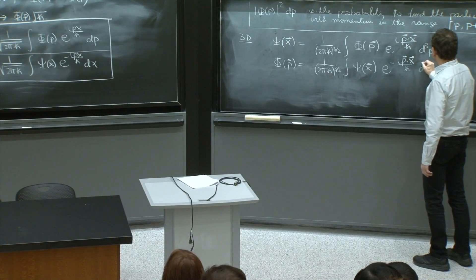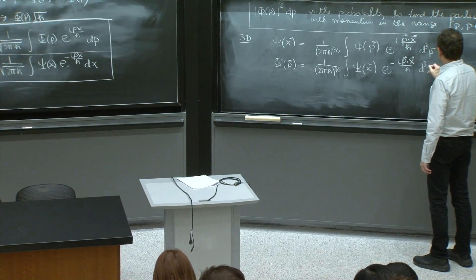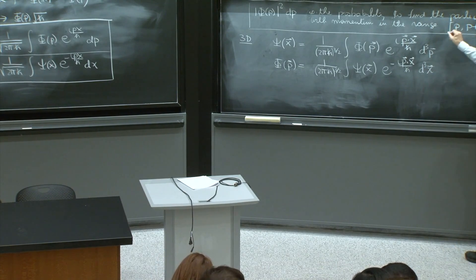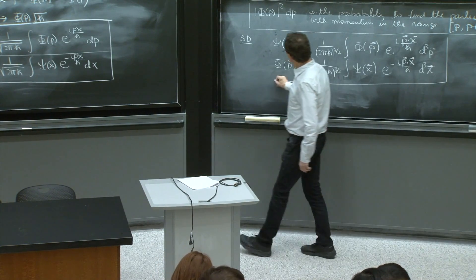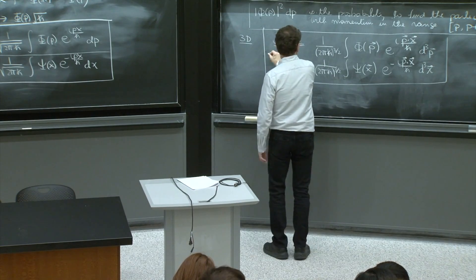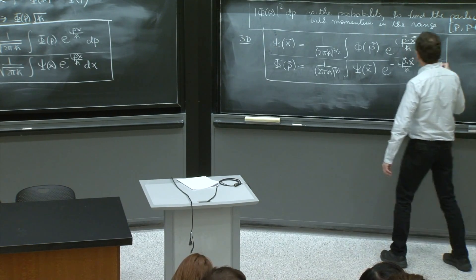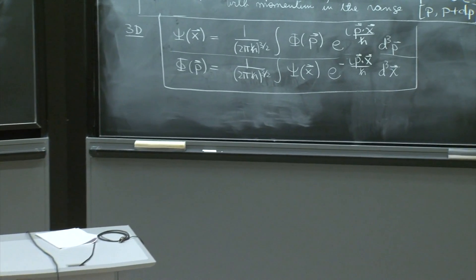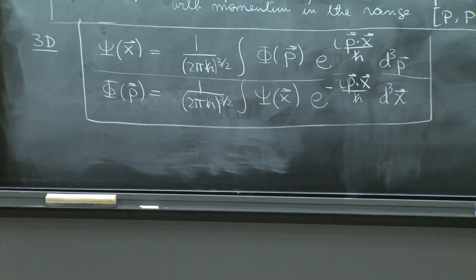same dot product but negative exponent d cubed x. So these are the three-dimensional versions of your x versus p.